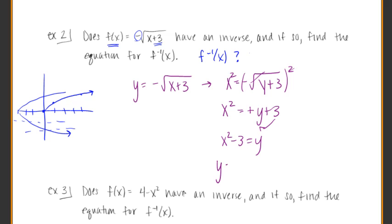You can get x squared minus 3 equals y, or you can say y is obviously x squared minus 3, so we have it in the correct order. So in using inverse notation, you write it as f inverse of x is equal to x squared minus 3.